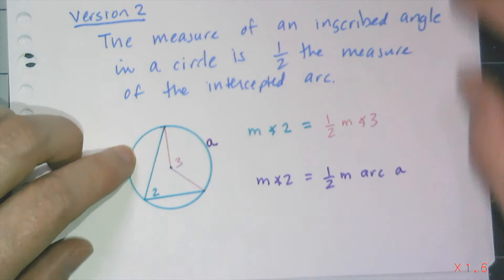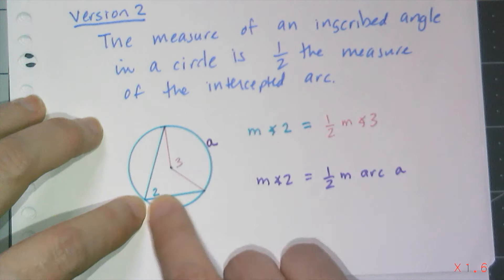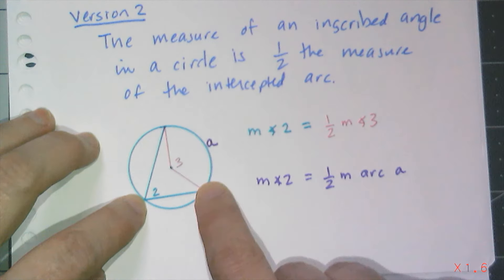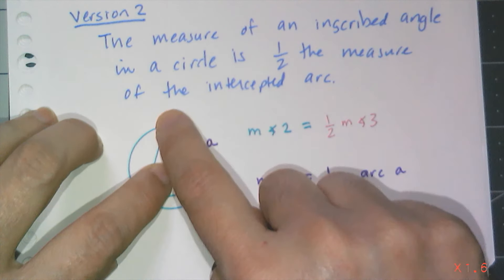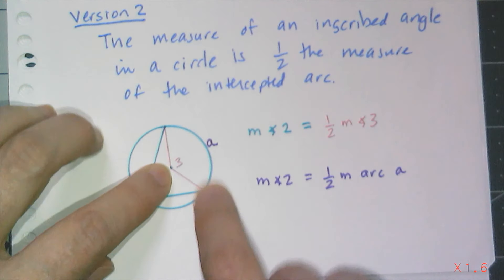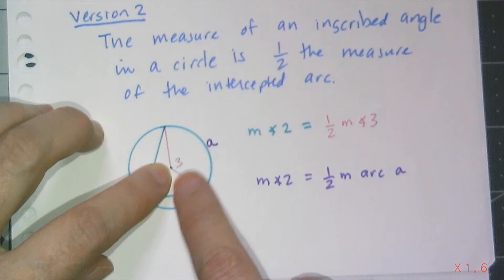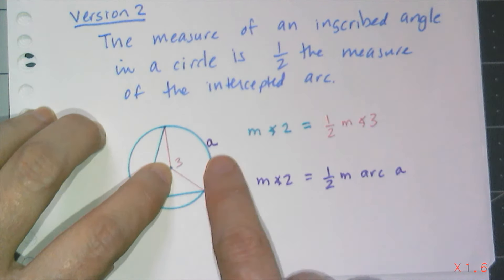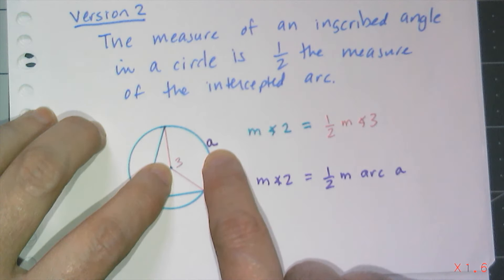So I created this little drawing right here. Angle two is the inscribed angle. It intercepts arc A. Angle three is a central angle that also intercepts arc A. Now we know by the definition of measure of an arc that the measure of angle three is equal to the measure of arc A.